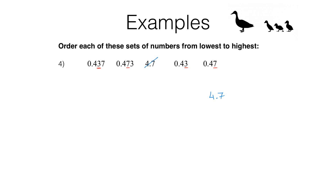In the hundredths column we've got a 3, a 7, a 3 and a 7. So the ones with the 3s are going to be the smaller numbers. They've both got a 3 though, so we have to look at the next place value column along. In one case we've got a 7 — seven thousandths — but in the other case we haven't got anything; we could put a zero there — zero thousandths. So the smallest number is 0.43 (or 0.430 if you prefer), followed by 0.437.